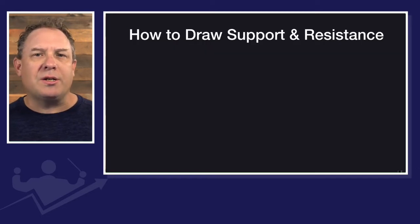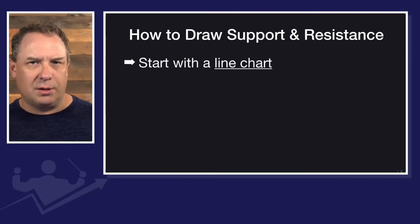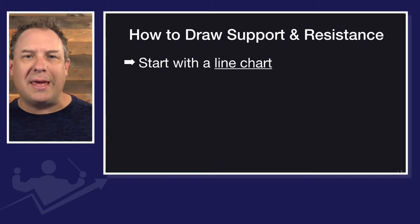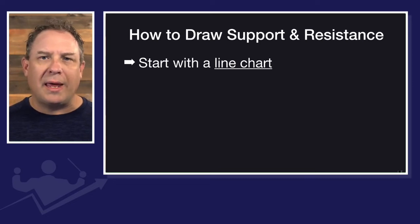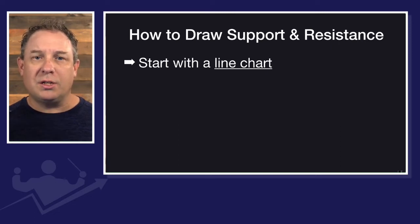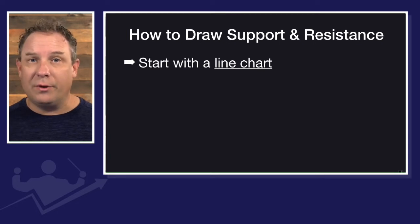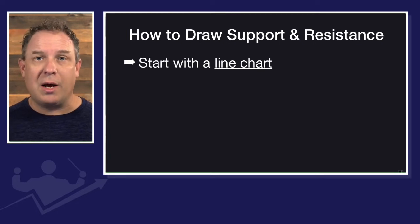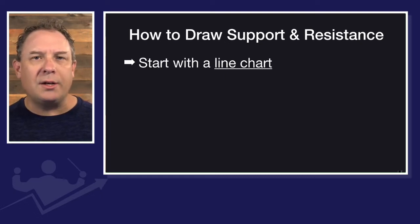Here's how we start drawing our support and resistance. Number one, we're going to start with a line chart. Most people start with a candlestick chart or a bar chart — we are going to start with a line chart. The line chart is the most basic type of chart. It simply draws a line connecting the closing price of whatever you're trading.